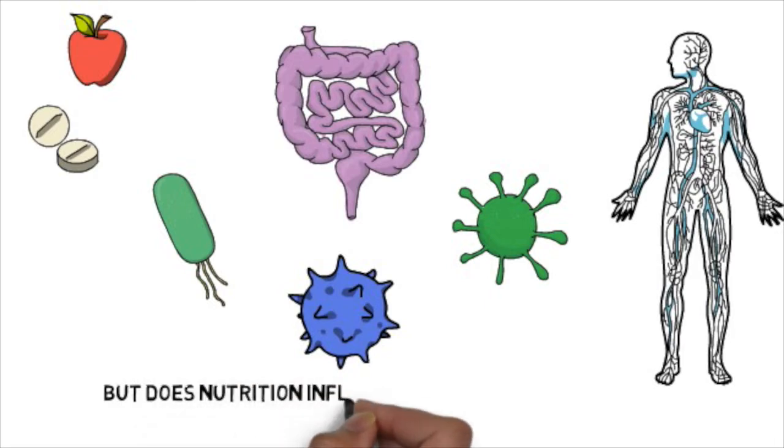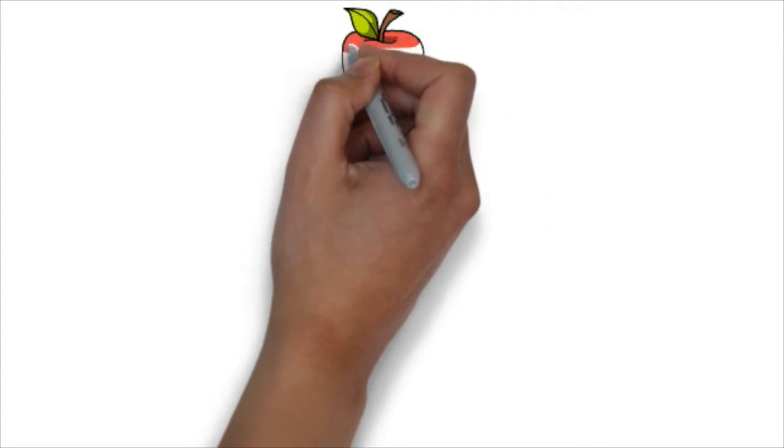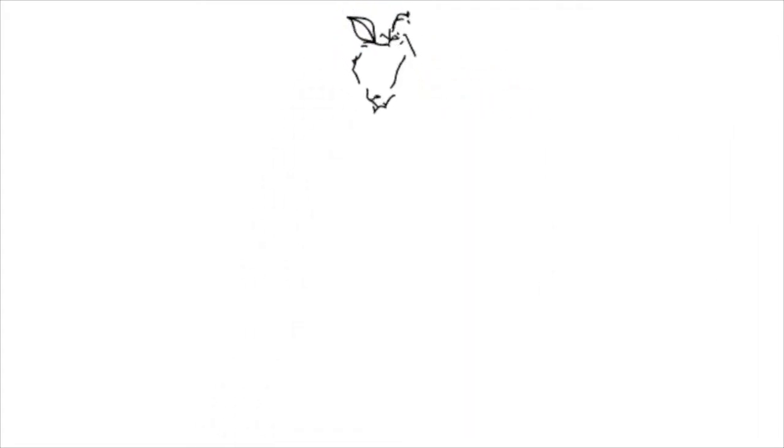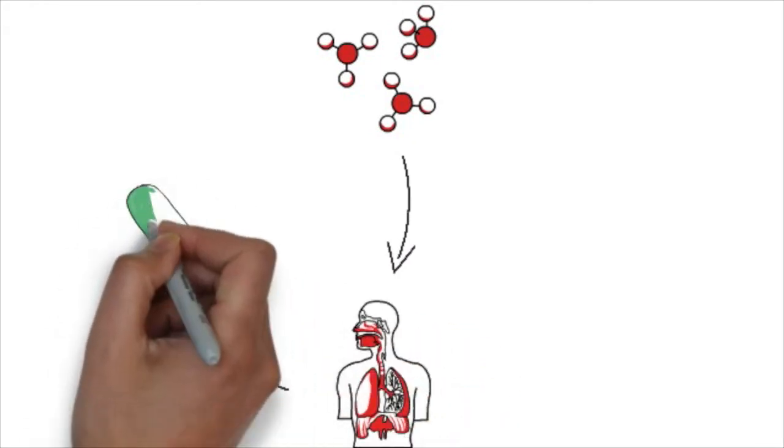But how nutrition influences the ability of the microbiome to change the response of the host to its environment is only poorly understood up until now. The difficulty in understanding such interactions stems from the nutrient complexity that exists in the food we eat, and there are possible direct effects on the host and indirect effects through the microbiome.